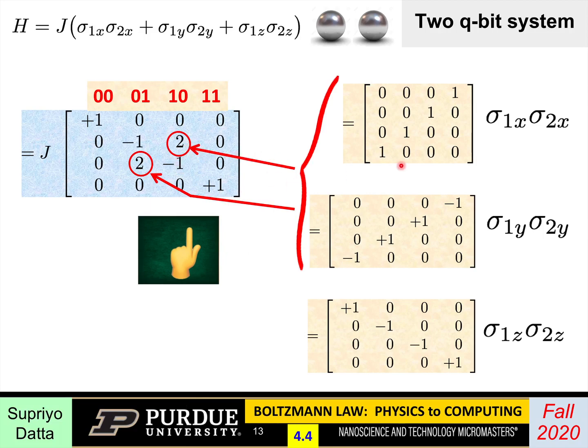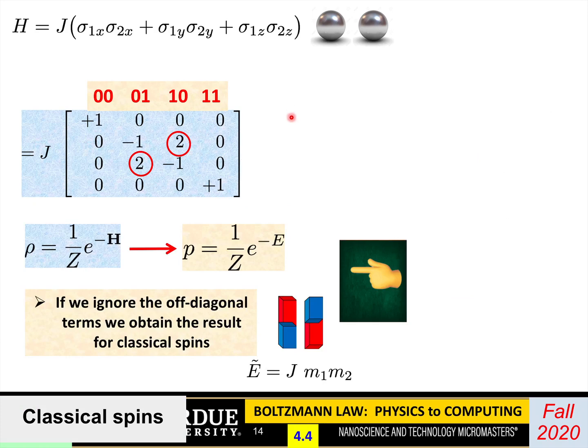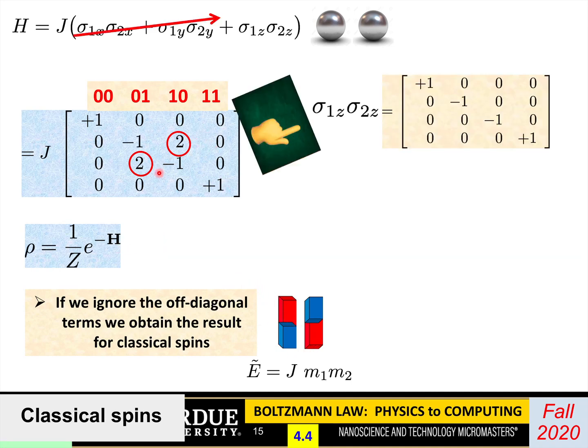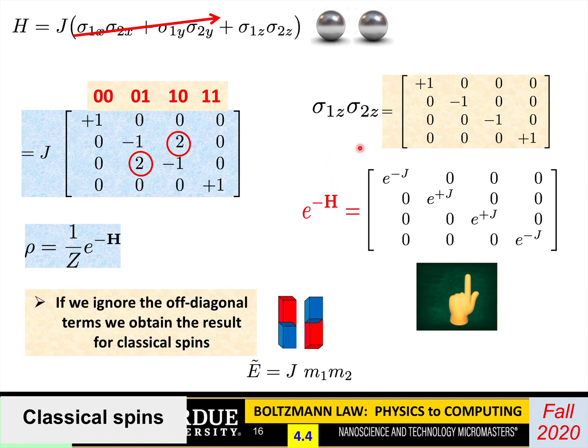Now, these off-diagonal terms are coming from the x and y terms of the original Hamiltonian matrix. What we need to do is find the density matrix, which is exponential of minus H. If we ignore the off-diagonal terms, which came from x and y, then this would be all equivalent to doing just classical spins, because then you'd have a purely diagonal matrix. If you ignore these, then you're just keeping the z terms. And then if you do exponential of this, the way you exponentiate a diagonal matrix is along the diagonal, you just put down e to the power negative of that quantity.